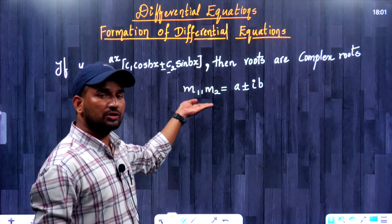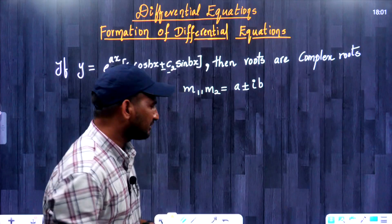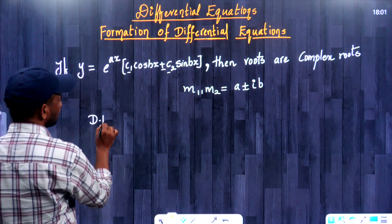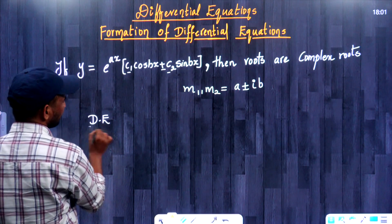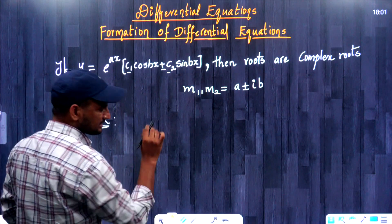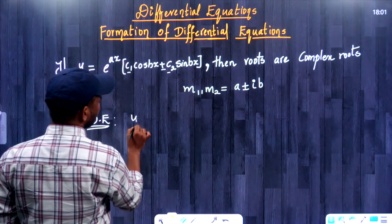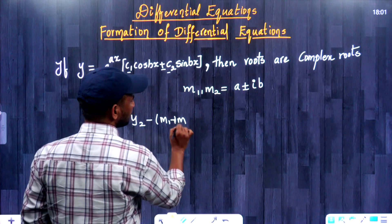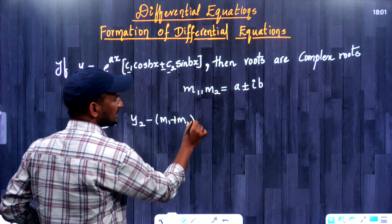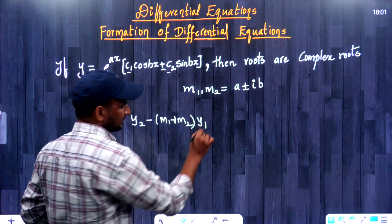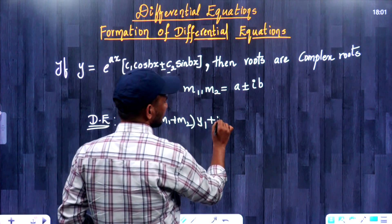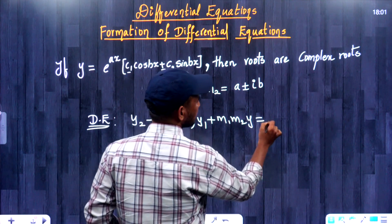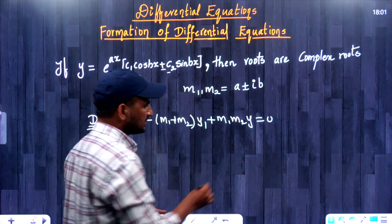Whenever you have two roots, we will tell you the differential equation. The formula is: y2 minus of (m1 plus m2) into y1 plus m1 times m2 into y is equal to 0.